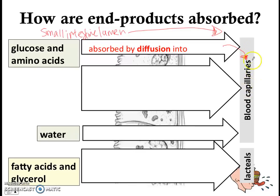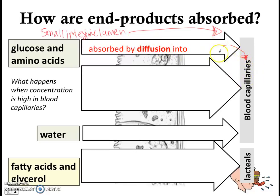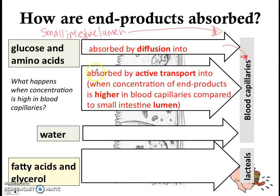Glucose and amino acids are absorbed by diffusion — the concentration in the small intestine lumen is higher than in the blood capillaries, so they get absorbed by diffusion into the blood capillaries. However, as you absorb more and more glucose, the blood capillaries start to have a very high concentration. So when the concentration is very high in the capillaries, we need to use active transport — using energy, absorbing them again into the blood capillaries.